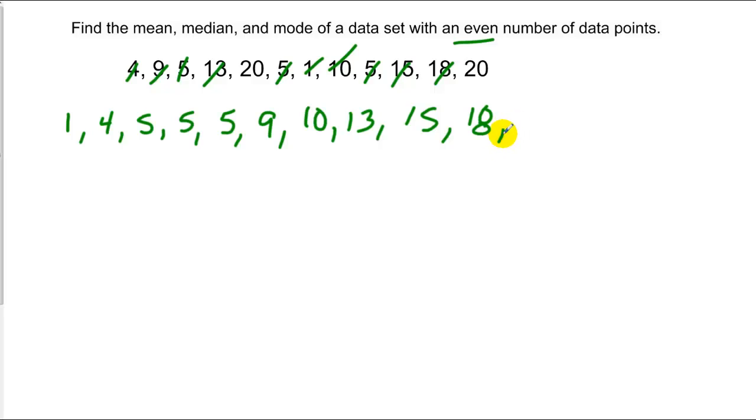Let's count how many numbers we have. We have 1, 2, 3, 4, 5, 6, 7, 8, 9, 10, 11, 12 numbers. So we'll add all these numbers up and divide by 12. In doing so, we end up with an average of 10.41.